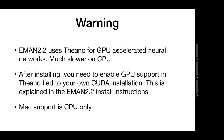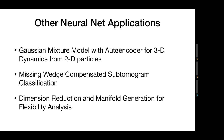Just a warning: EMAN2.2 uses Theano for all of the neural network stuff. Theano has GPU acceleration capability and is 20 to 30 times slower on CPU than GPU. After you install EMAN2.2, you won't get CUDA capability immediately — there are extra instructions to gain GPU support. We're also doing a bunch of other things with these neural networks: using a Gaussian mixture model with an autoencoder for 3D dynamics, missing wedge compensation for subtomogram classification, and a strategy for dimensional reduction manifold generation for flexibility analysis.